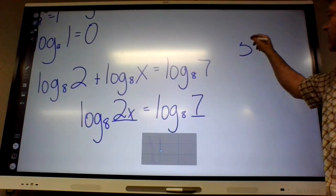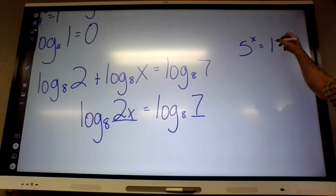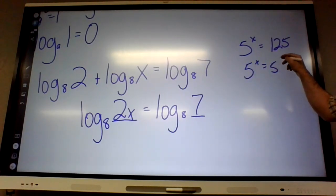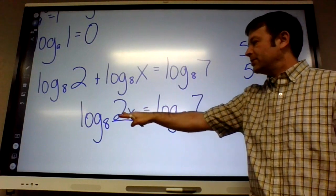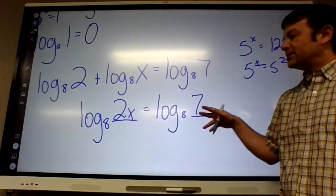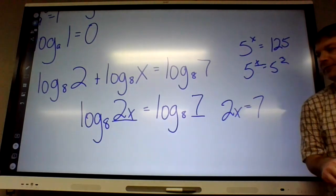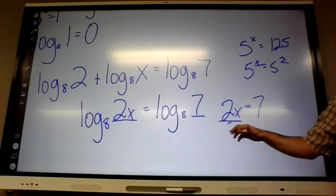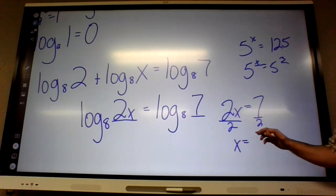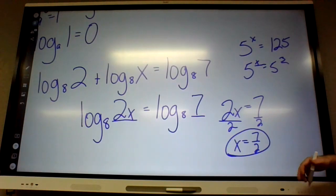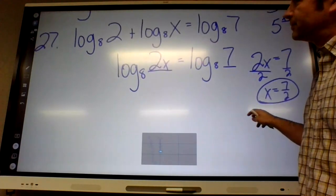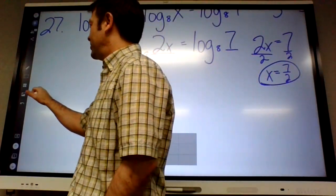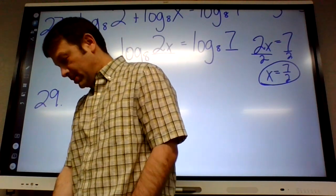Once upon a time, you guys remember the chapter where we had like 5 to the x equals 1 to the 5, and we made them the same base, and then those two had to be equal. It's the same thing. So if you have the same logs that are equal, 2x and 7 have to be equal to make this true. So how do we solve that for x? 7 over 2. 7 divided by 2 is 7 over 2. This stuff is easy. You haven't learned yet. Never say it's easy until you get to the end.